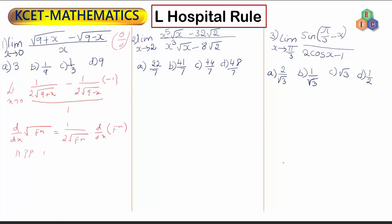Applying the limit as x tends to 0, I get 1 by 2 root 9, and since minus into minus is plus, the second term also becomes plus 1 by 2 root 9. Square root of 9 is 3, so each term is 1 by 6. Therefore 1 by 6 plus 1 by 6 equals 2 by 6, which equals 1 by 3.